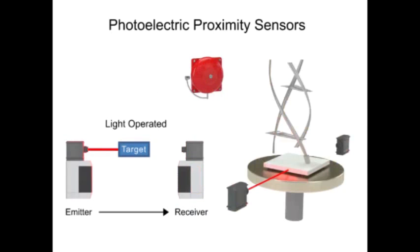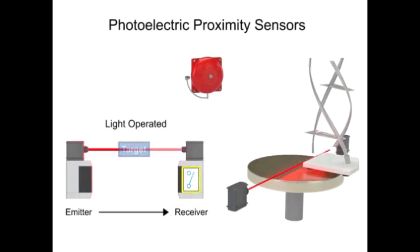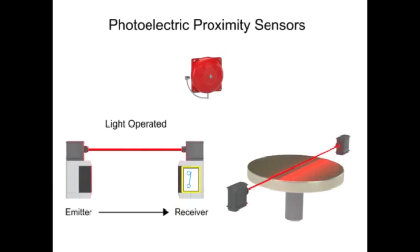Conversely, in this light-operated mode example, the absence of light being received by the receiver is normal. When the object is removed from the table, the switch is triggered and the alarm will sound.